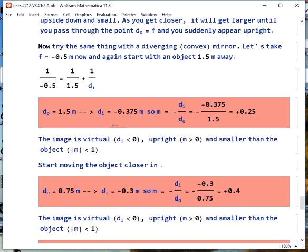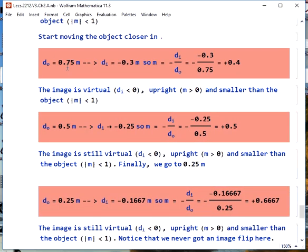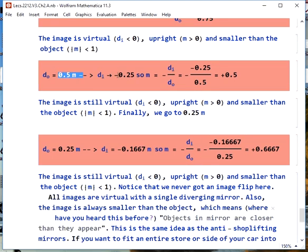If we try the same thing with a diverging mirror, a convex mirror, we take F equals negative 0.5, and again start 1.5 meters away. We do the math, and we get an image distance of negative 0.375 meters, so our magnification is positive 0.25. We have a virtual image, because it's negative image distance. It's upright, since M is greater than 0, and it's smaller than the object, since absolute value of M is less than 1. As we start moving closer in, object distance 0.75 meters, the image distance is negative 0.3, our magnification is plus 0.4. Still a virtual image, still upright, still smaller than the object, we keep moving in, object distance 0.5 meters, image negative 0.25, magnification plus 0.5. Still virtual, still upright, still smaller than the object.